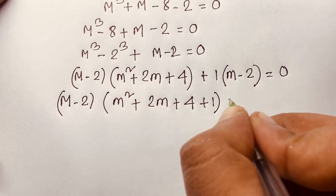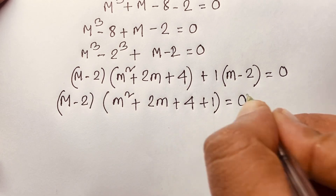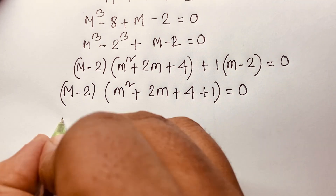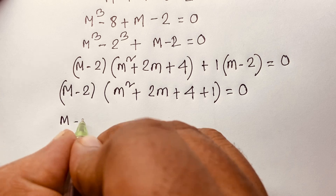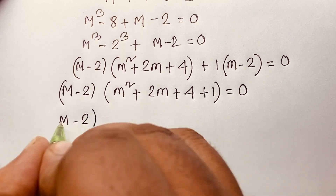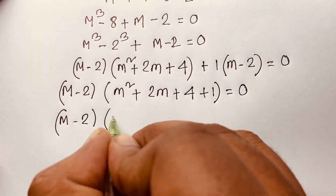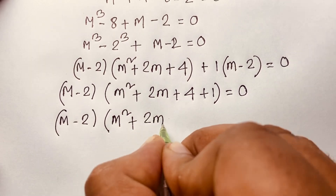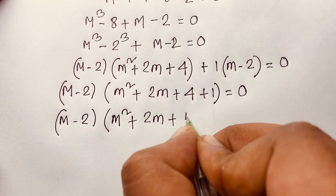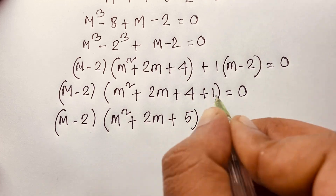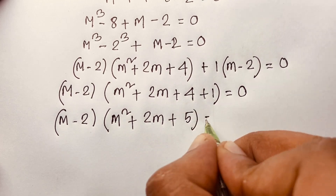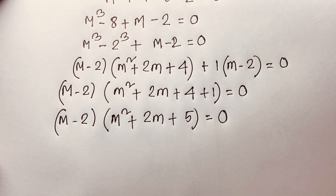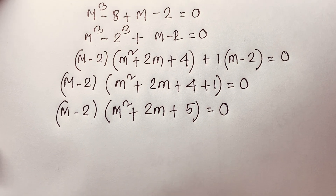Taking m minus 2 as the common factor, we get m minus 2 times m squared plus 2m plus 4 plus 1, which gives us m minus 2 times m squared plus 2m plus 5 equals 0, since 4 plus 1 equals 5.